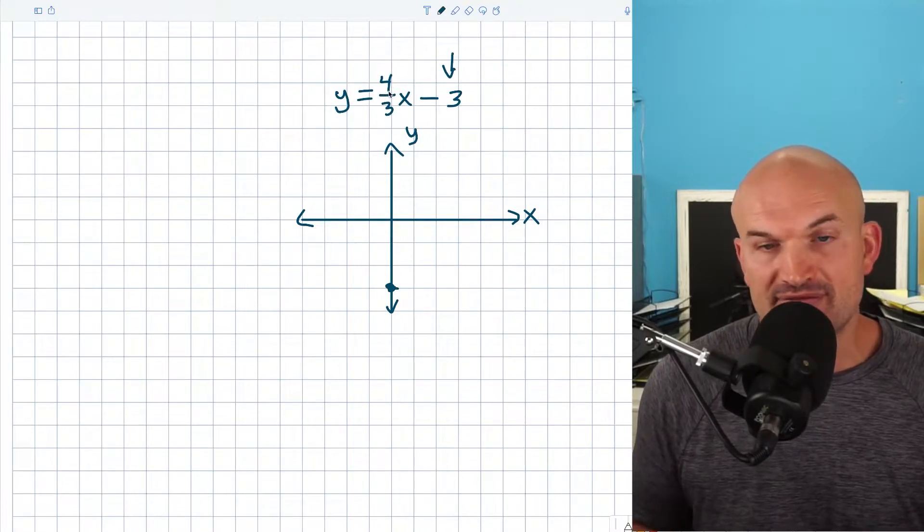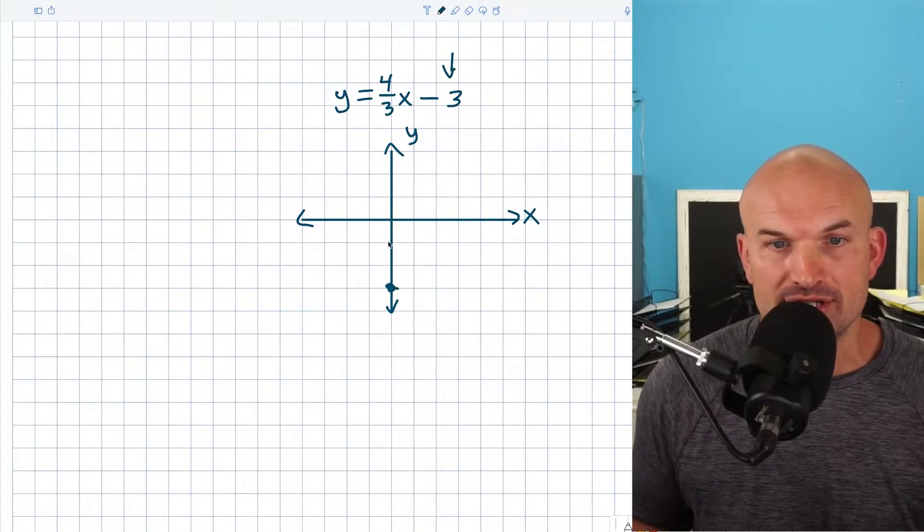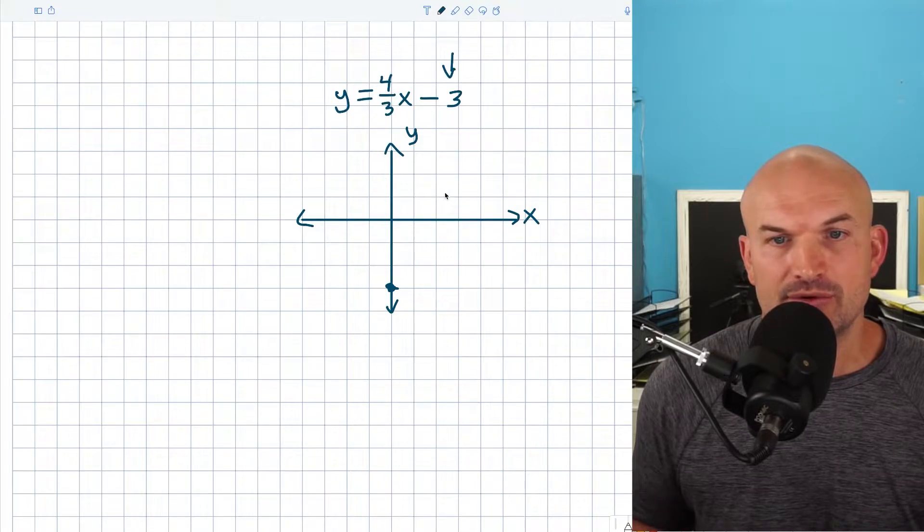And then we follow the slope to find another point. You can go to the right, go to the left. In this case, I'm going to go to the right. So I'm going to go up four. So one, two, three, four, and then I'm going to go to the right three, one, two, three.